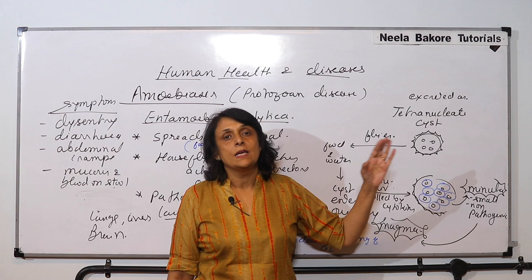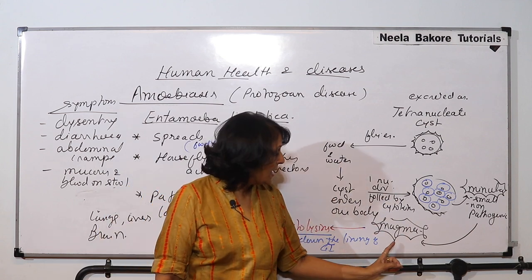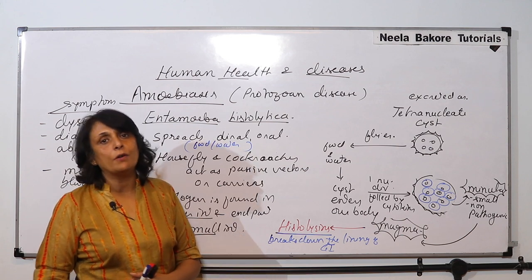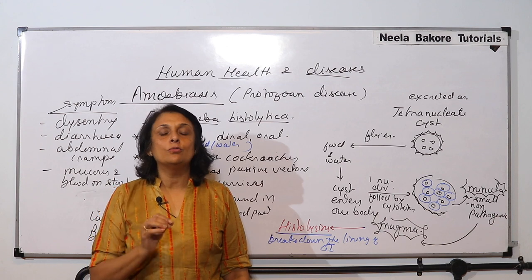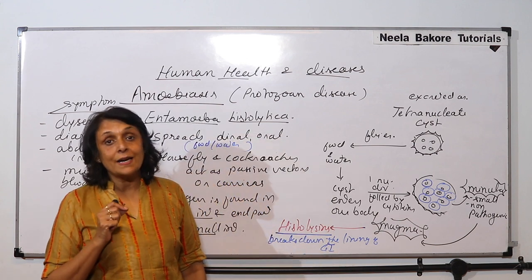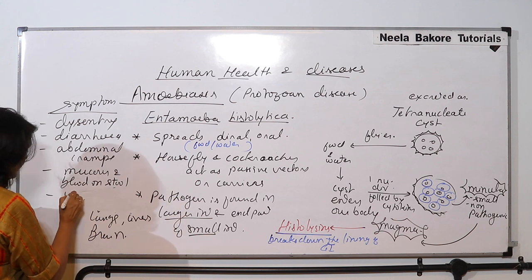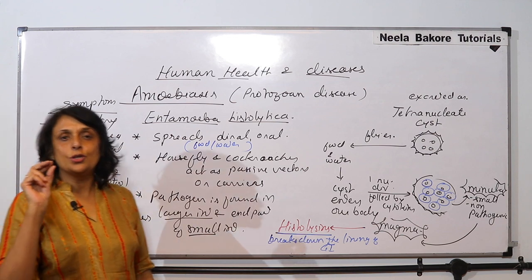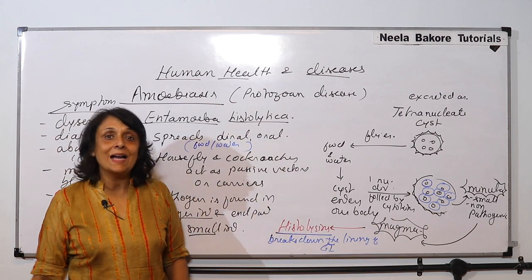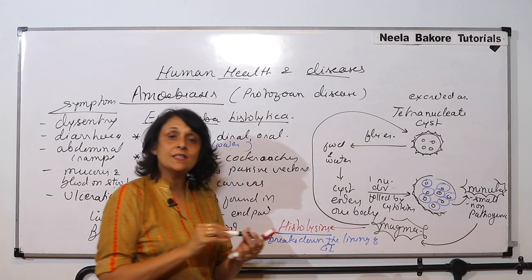Once inside, nuclear division and cytoplasmic division take place — four nuclei change into eight, eight cells are formed, the cyst ruptures into minuta and magma. The magma is the pathogenic stage; it releases histolysins which cause damage to our alimentary canal, breaking down the mucous membrane, blood vessels, and cells. This results in cramps, blood loss in the fecal matter, and sometimes ulcerations — wherever there is chemical damage to the tissue, ulcers form. After some time, magma changes back into cysts and gets excreted out, completing the cycle.